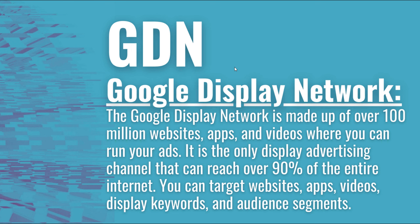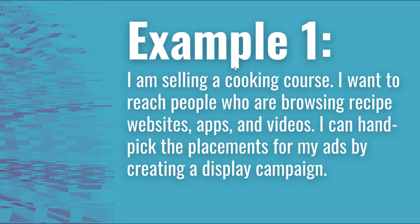So let's start with an example. Let's say I'm selling a cooking course and I want to reach people who are browsing recipe websites, apps, and videos. Anybody looking up content related to cooking and recipes — I want to reach them with my cooking course. I can handpick the placements for my ads by creating a display campaign.